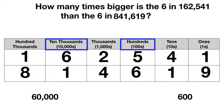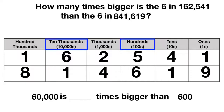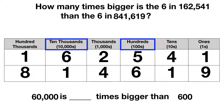To answer this question, we really need to answer: 60,000 is how many times bigger than 600? This is challenging because 10,000s are not right next to 100s. We know on a place value chart, each place value is 10 times bigger than the place value to its right.